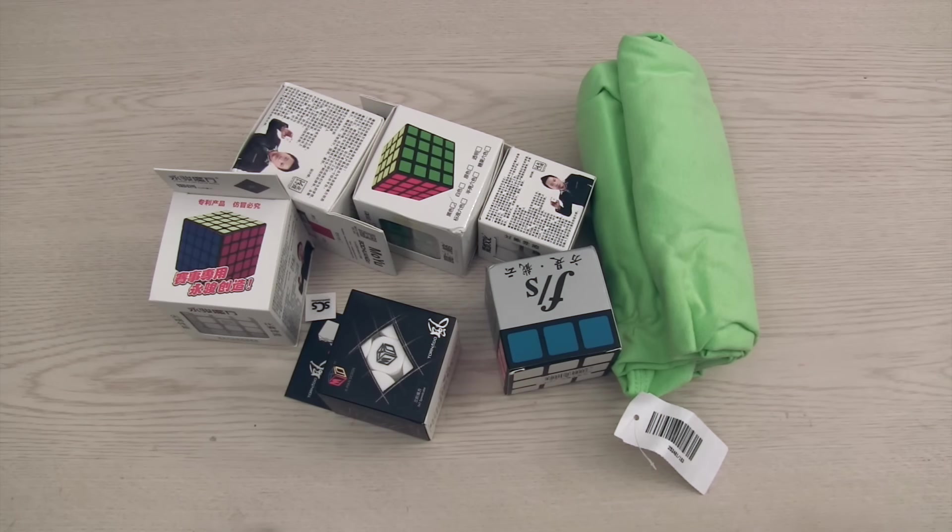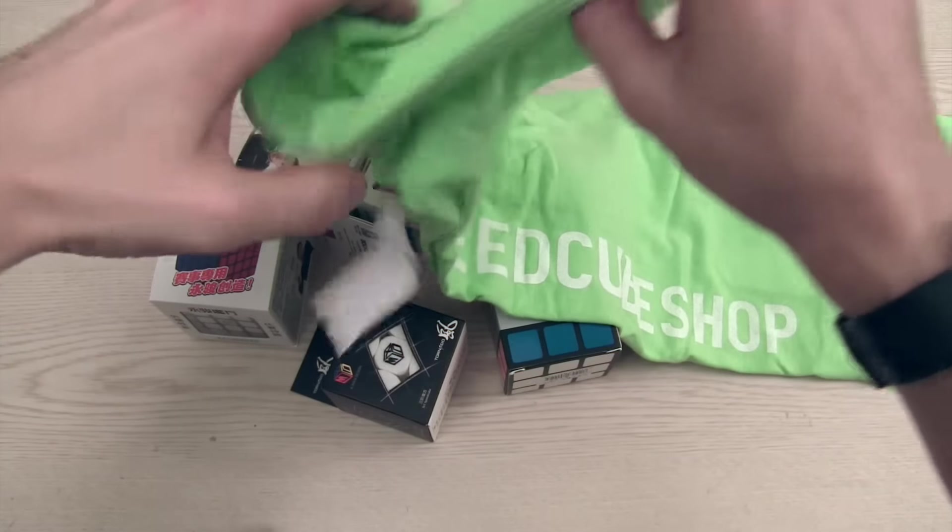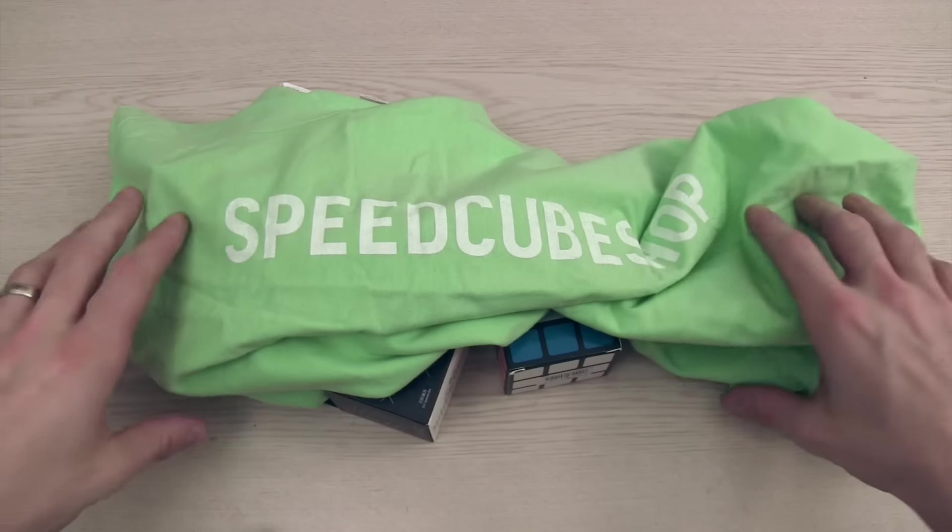So we've got a lot of stuff here. First off, a shirt. SpeedCube Shop has been really ramping up their clothing line. I think they also have some iPhone cases. This one has a nice little logo along the side of it. So I will model this. I'll probably put the photo in the video in just a second. There you go.